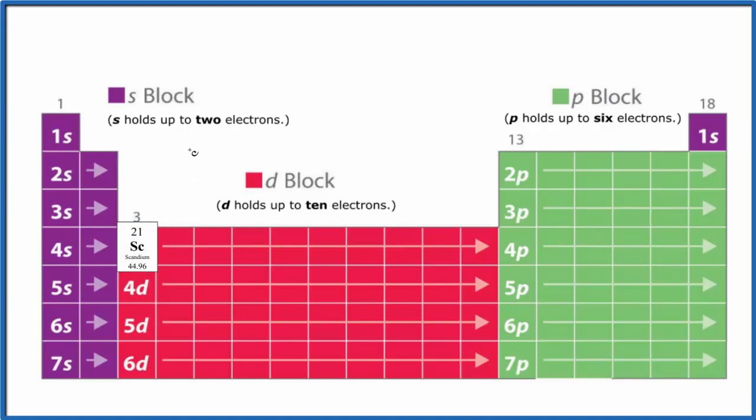So we start off in the first energy level, we have 1s¹, 1s², and now that's full. So we go to the second energy level, 2s¹, 2s², over to p, 2p¹, 2, 3, 4, 5, 6. P can hold up to 6, so 2p⁶, 3s², then 3p⁶.